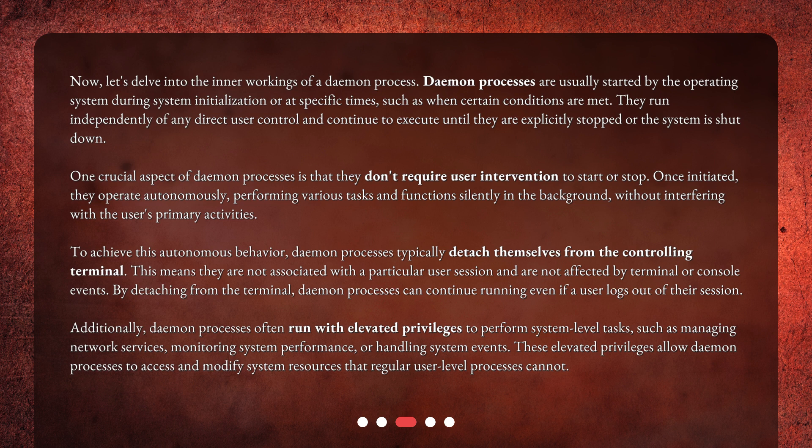To achieve this autonomous behavior, daemon processes typically detach themselves from the controlling terminal. This means they are not associated with a particular user session and are not affected by terminal or console events. By detaching from the terminal, daemon processes can continue running even if a user logs out of their session. Additionally, daemon processes often run with elevated privileges to perform system-level tasks, such as managing network services, monitoring system performance, or handling system events. These elevated privileges allow daemon processes to access and modify system resources that regular user-level processes cannot.